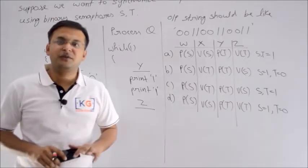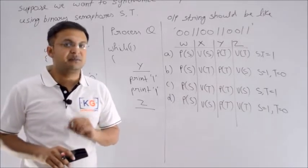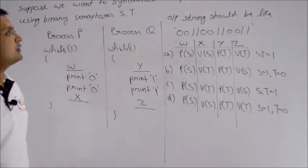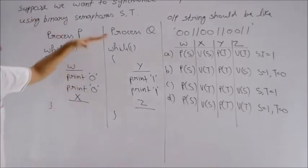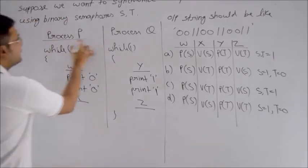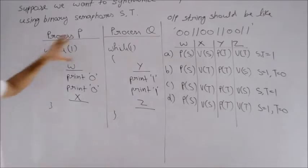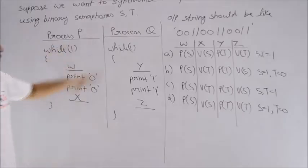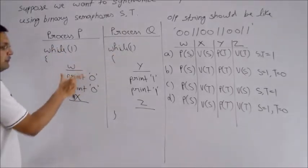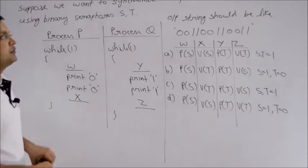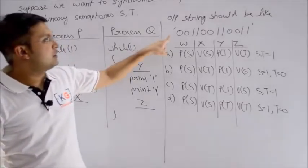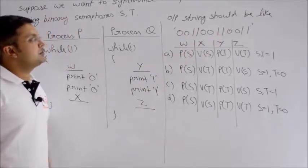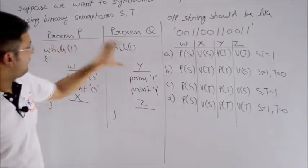Hi friends, now let's try a question based on process ordering in case of semaphores. In this question, suppose we want to synchronize two processes P and Q. We have two processes - process P and process Q - and we're using two binary semaphores S and T. The output string should be like 00110011 in this fashion.